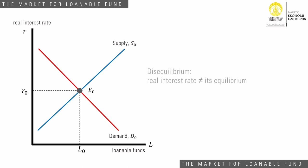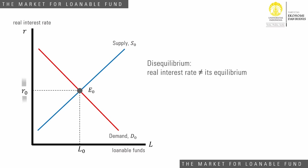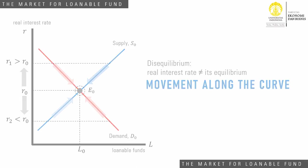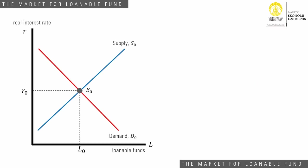Whenever equilibrium is not yet achieved — when the real interest rate is higher or lower than its equilibrium rate — there will be movements along the supply curve and along the demand curve. These are the movements when the rate is higher, and these are the movements when the rate is lower. They are moving to reach the equilibrium position due to excess supply or excess demand.